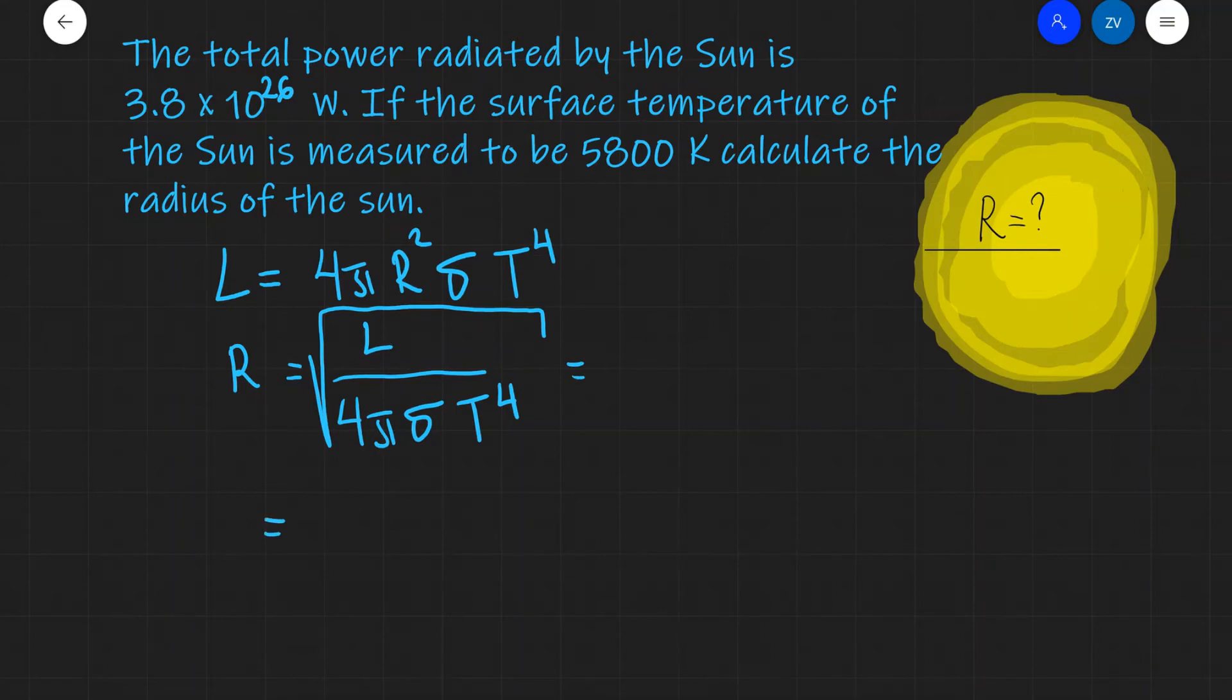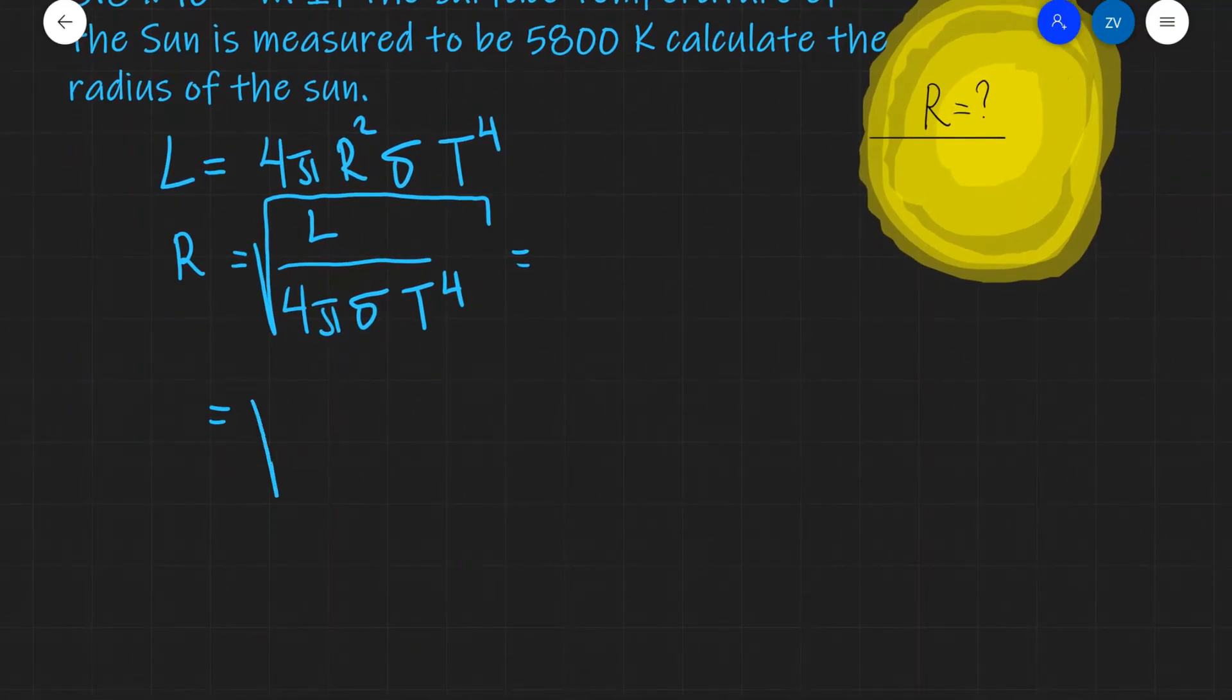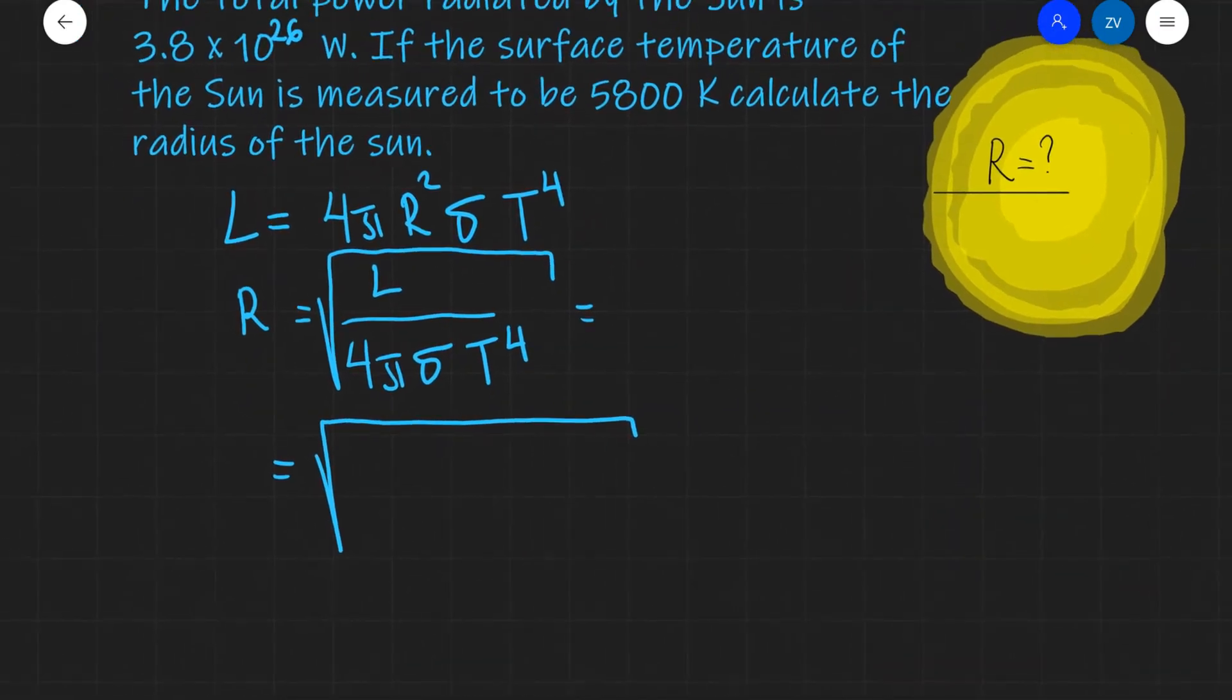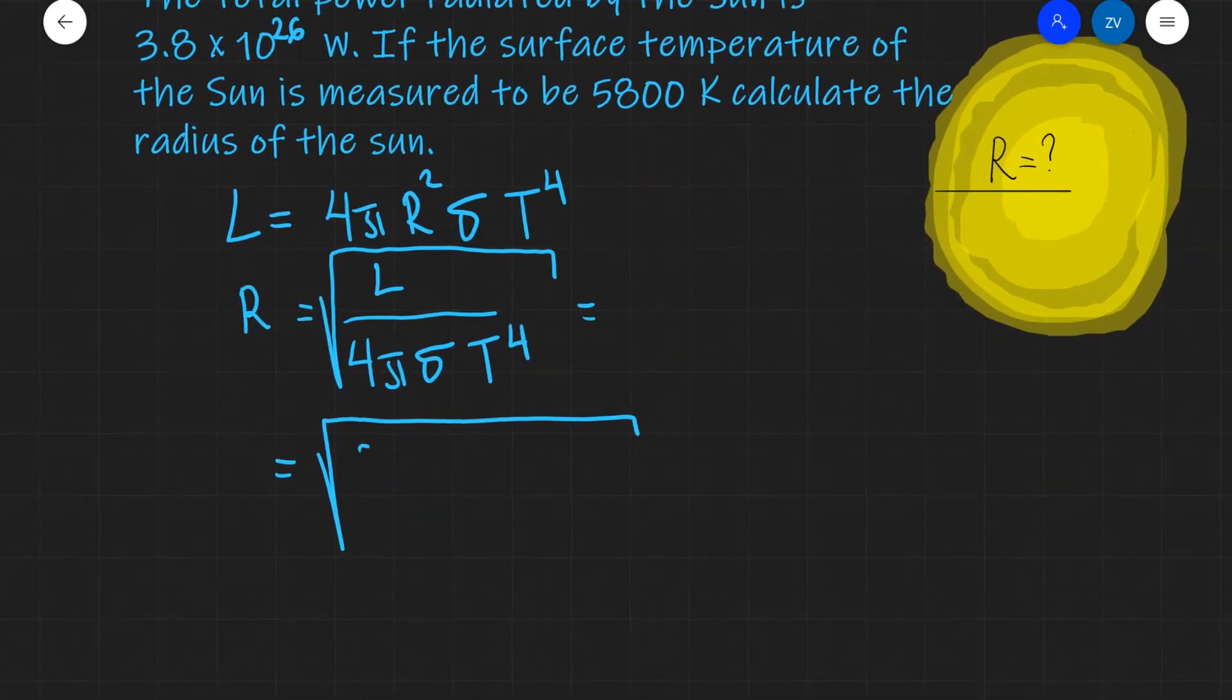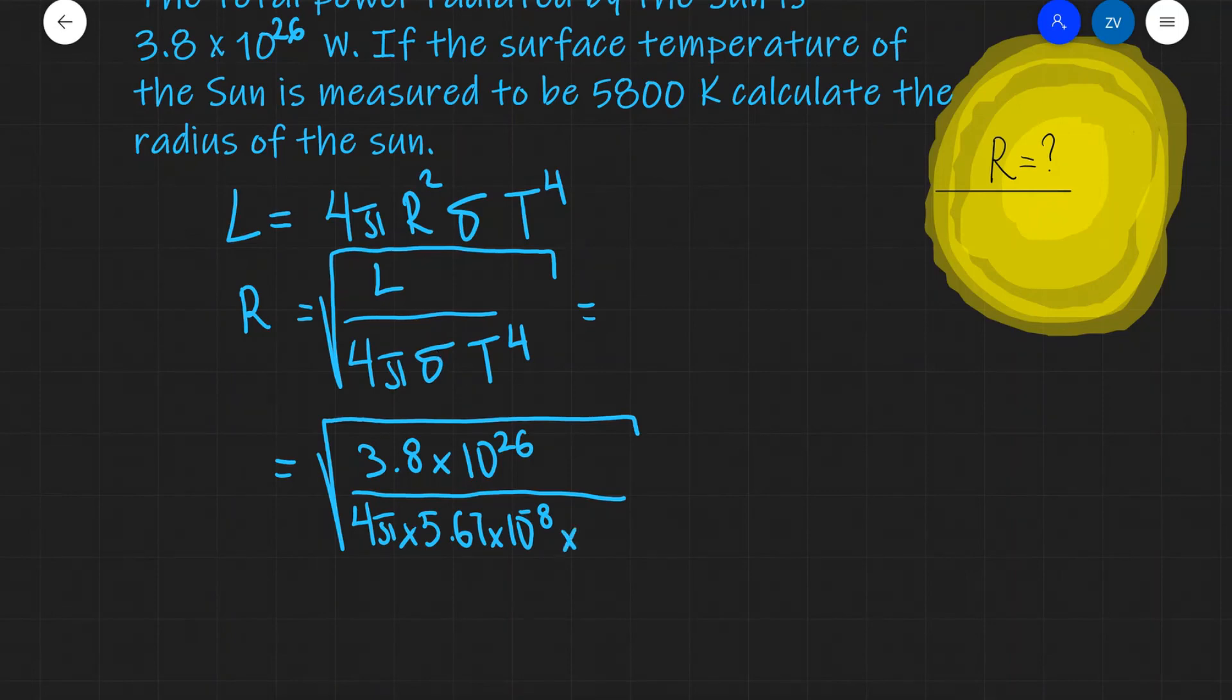So, this will be equal to the square root of the luminosity, which is the total power. That's going to be 3.8 × 10²⁶. And then we're going to divide this by 4π times Stefan-Boltzmann's constant, which is equal to 5.67 × 10⁻⁸.